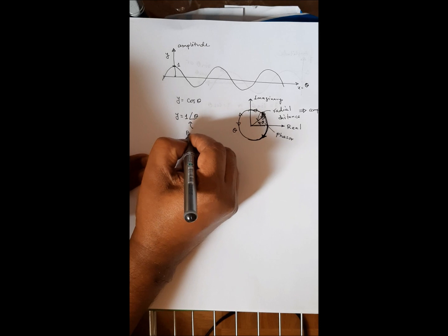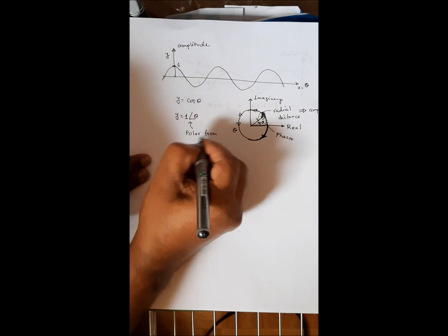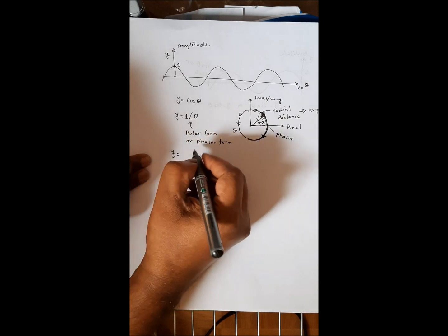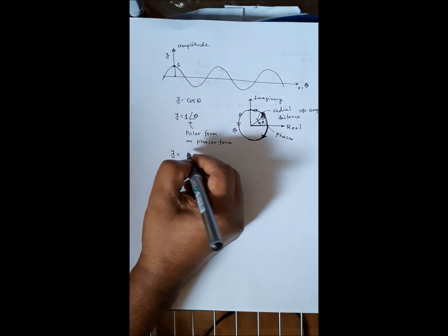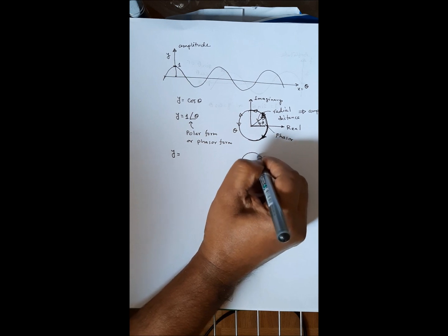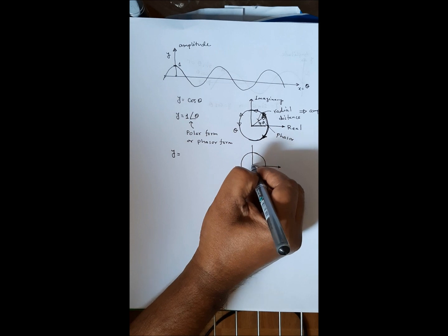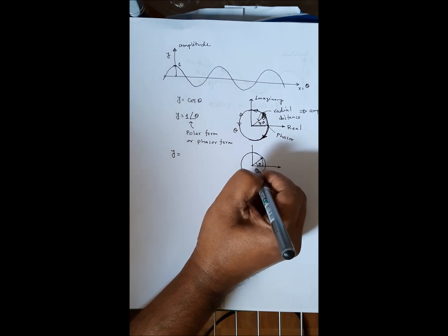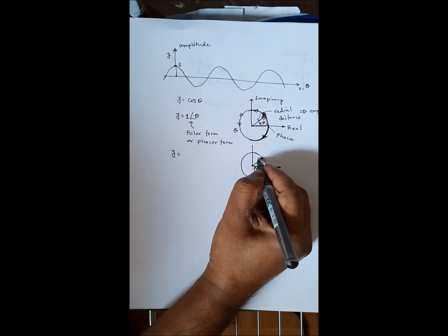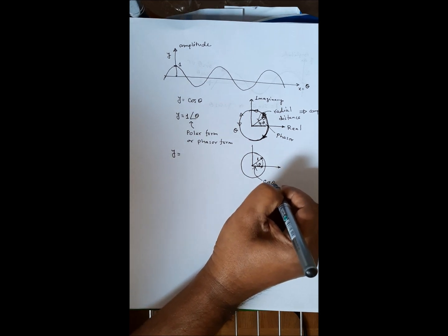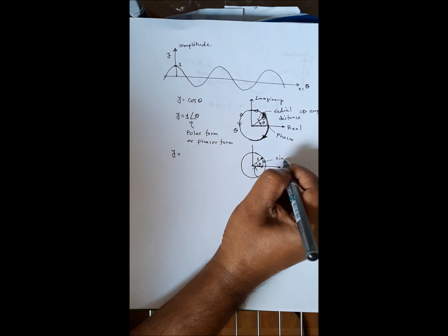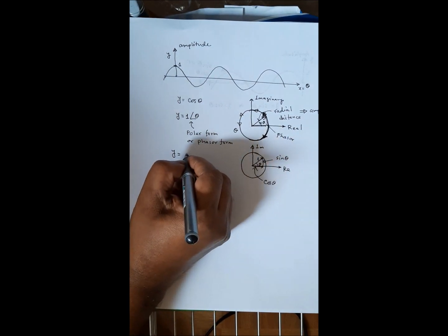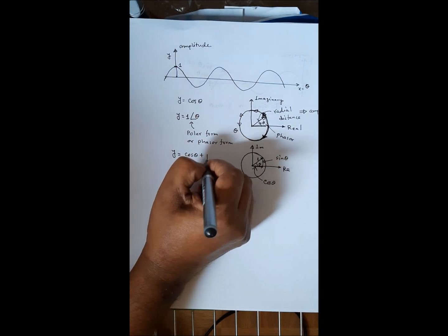We can also convert this phasor form into rectangular form. Drawing this clearly: we have this amplitude, and I can break it in terms of the angle theta. On the real axis, since r = 1, this value will be cosine(theta). The height will be sin(theta). So you can write: real axis component is cosine(theta) and imaginary axis component is sin(theta), giving cosine(theta) + j·sin(theta).